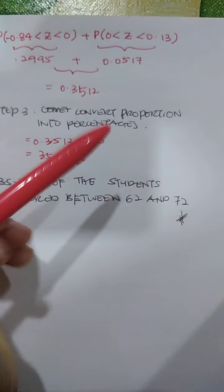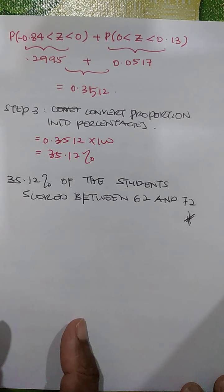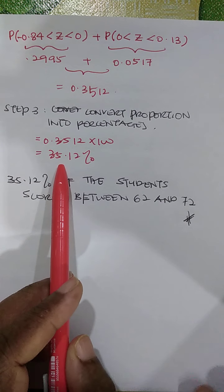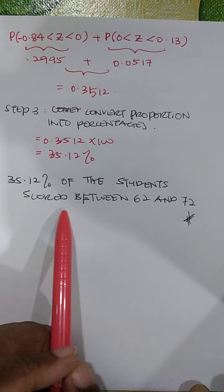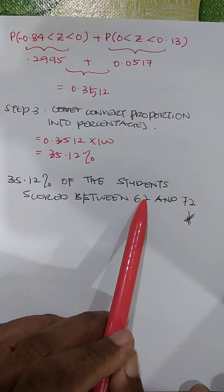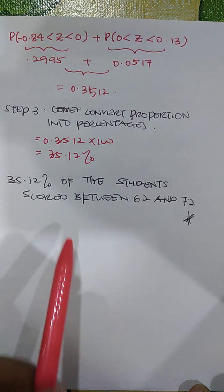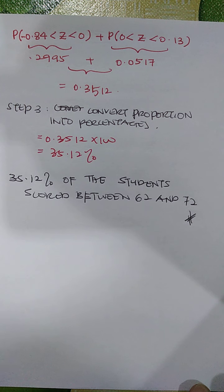Next step is, we convert it into percentages. Step 3, we convert it into percentages. Multiply by 100, you get 35.12. So 35.12% of the students scored between 62 and 72. So 35% of the students scores are between 62 and 72.